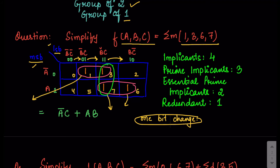Only the pink groups are considered. For the first group the common term on the MSB side is A-bar, and looking at the two columns the common term is C — so the answer is A-bar C. For the next group, A is common for both, and then B is the common term — giving AB. So the simplified expression is A-bar C plus AB.